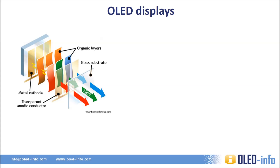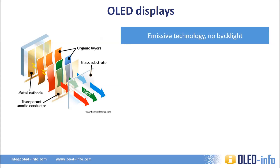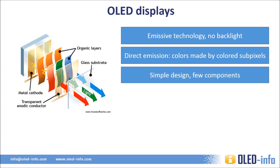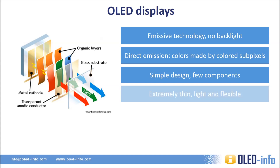As opposed to LCDs, OLEDs are emissive by nature — they do not need a backlighting unit. An OLED structure is very simple. Each subpixel is simply made from organic materials that emit light in either red, green, or blue. There's no need for polarizers, light guides, or color filters. OLEDs have very few components compared to an LCD screen, meaning that theoretically OLEDs should be cheaper to produce. They are also very thin and light, and it is far easier to make a flexible OLED compared to a flexible LCD.